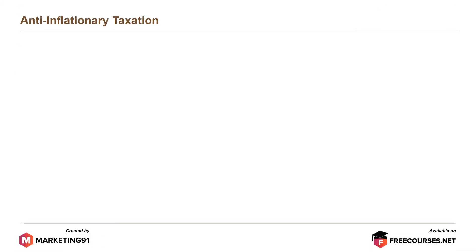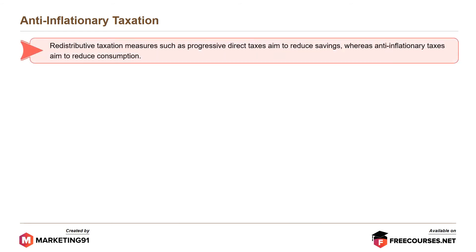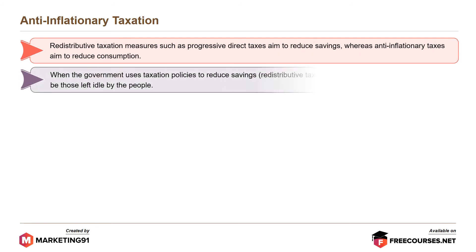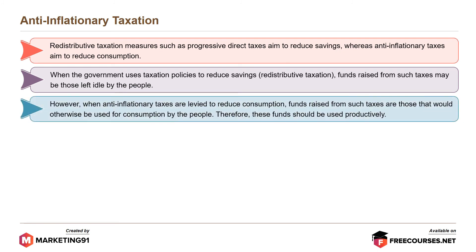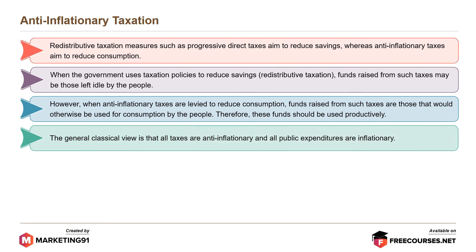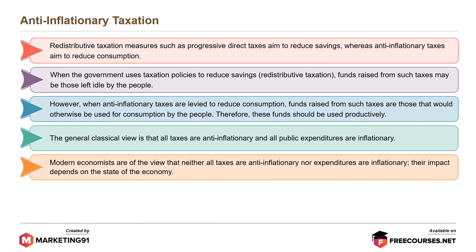Anti-inflationary taxation: redistributive taxation measures such as progressive direct taxes aim to reduce savings, whereas anti-inflationary taxes aim to reduce consumption. When the government uses taxation policies to reduce savings, funds raised may be those left idle by the people. However, when anti-inflationary taxes are levied to reduce consumption, funds raised are those that would otherwise be used for consumption, and therefore these funds should be used productively. The general classical view is that all taxes are anti-inflationary and all public expenditures are inflationary. Modern economists view that neither all taxes are anti-inflationary nor all expenditures are inflationary — their impact depends on the state of the economy.